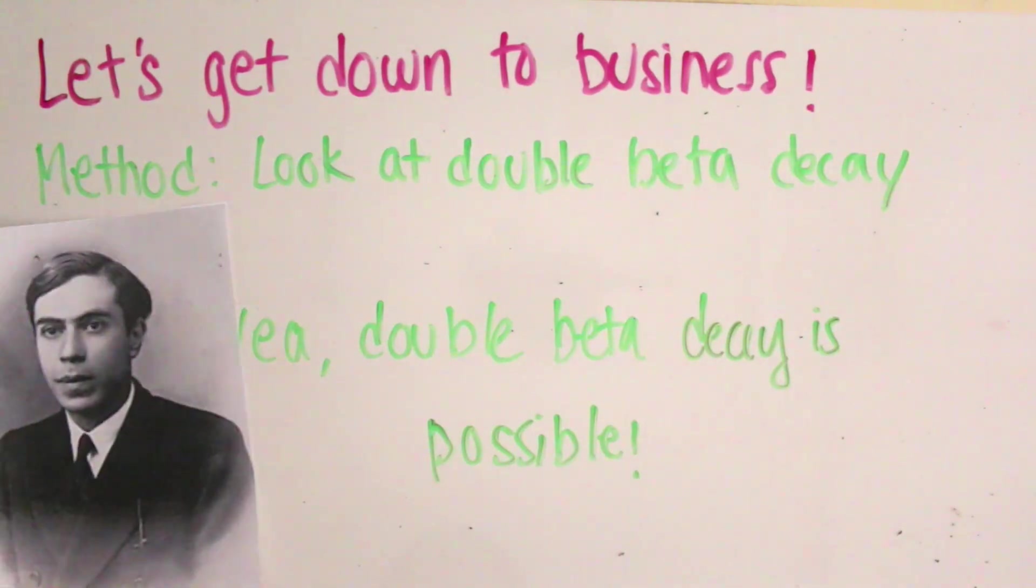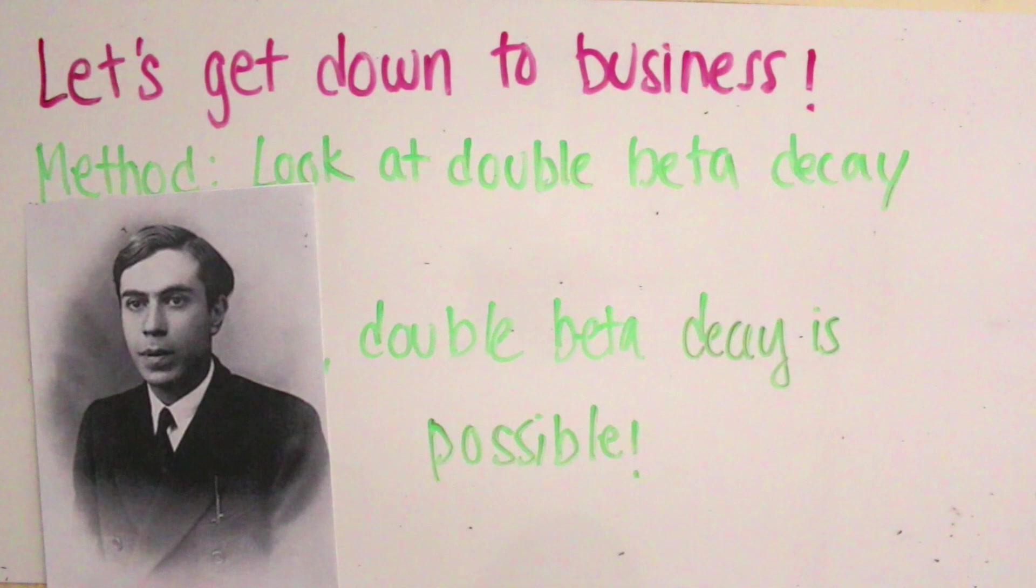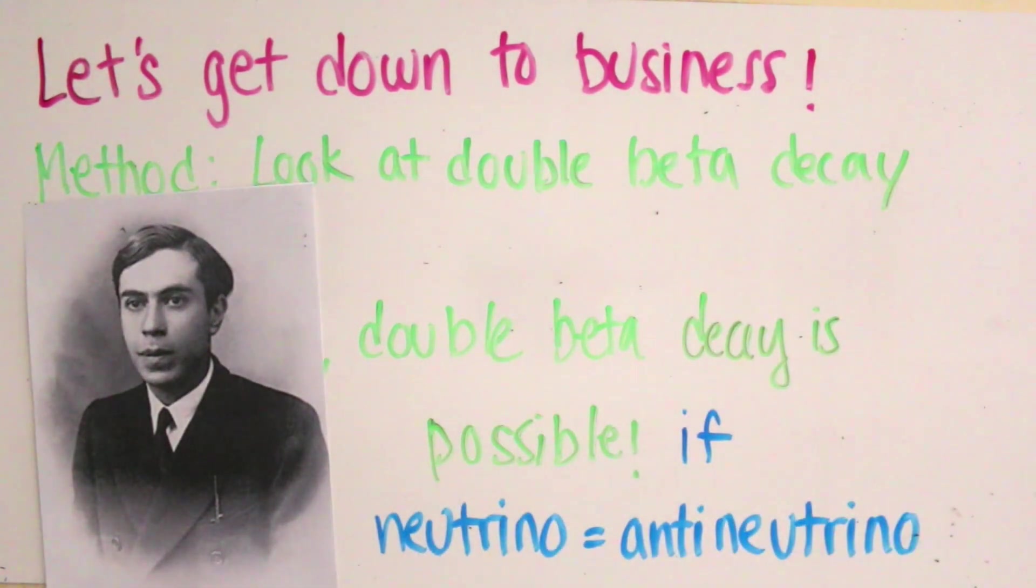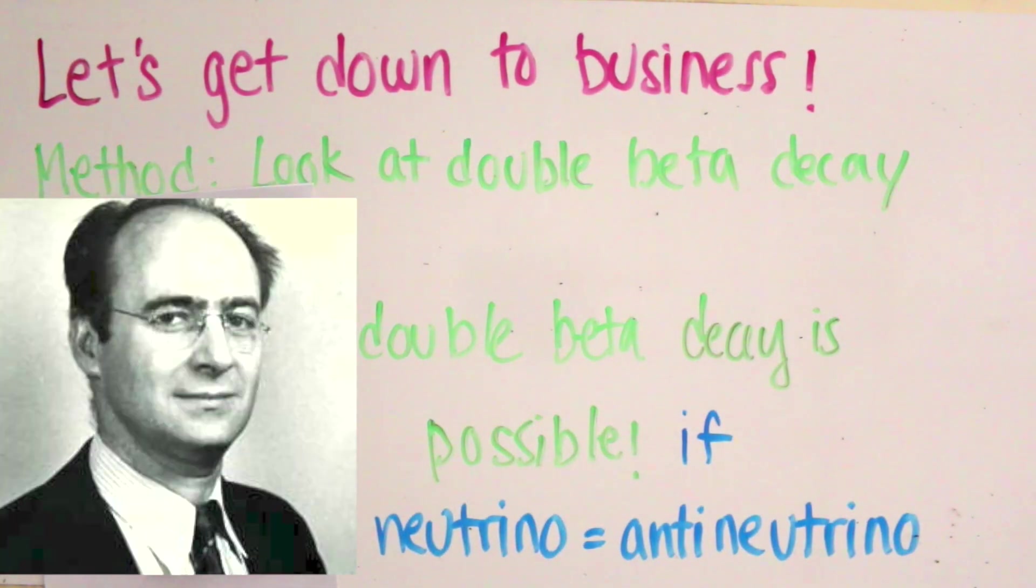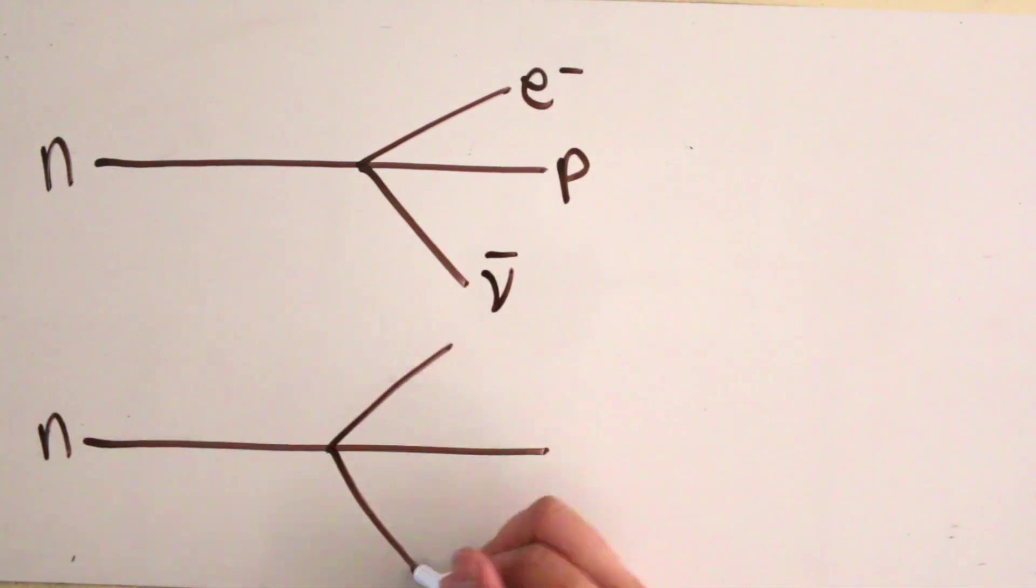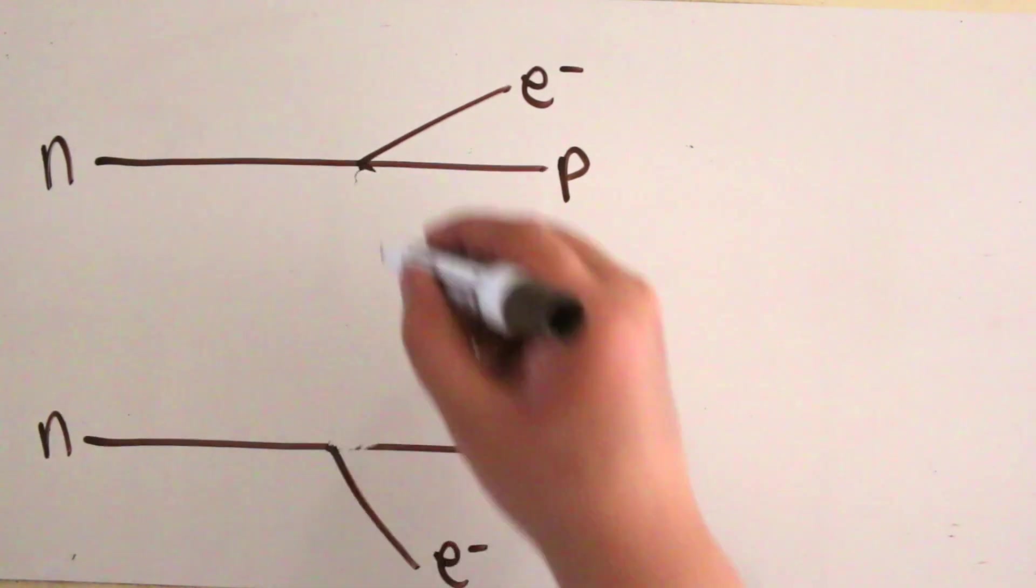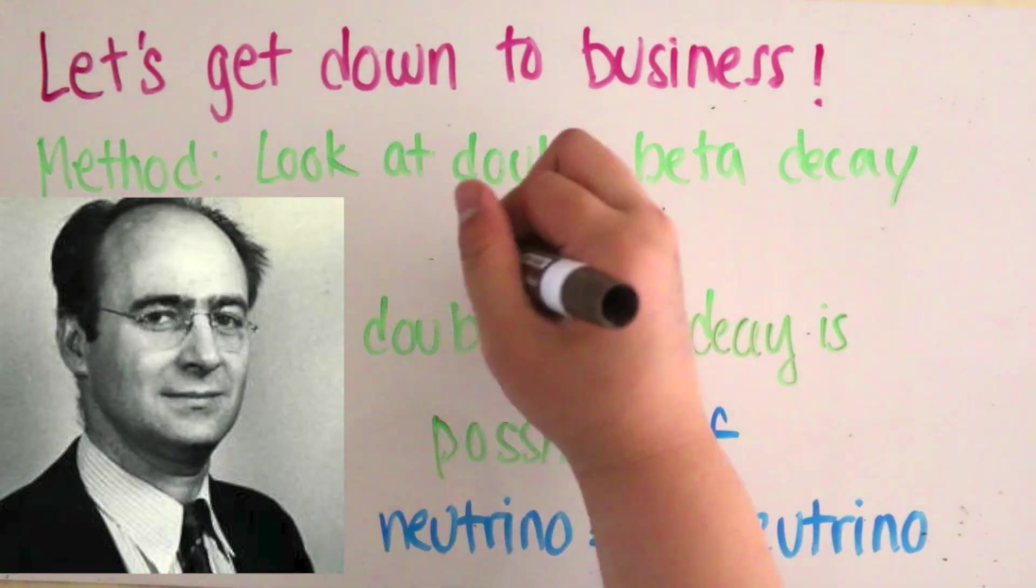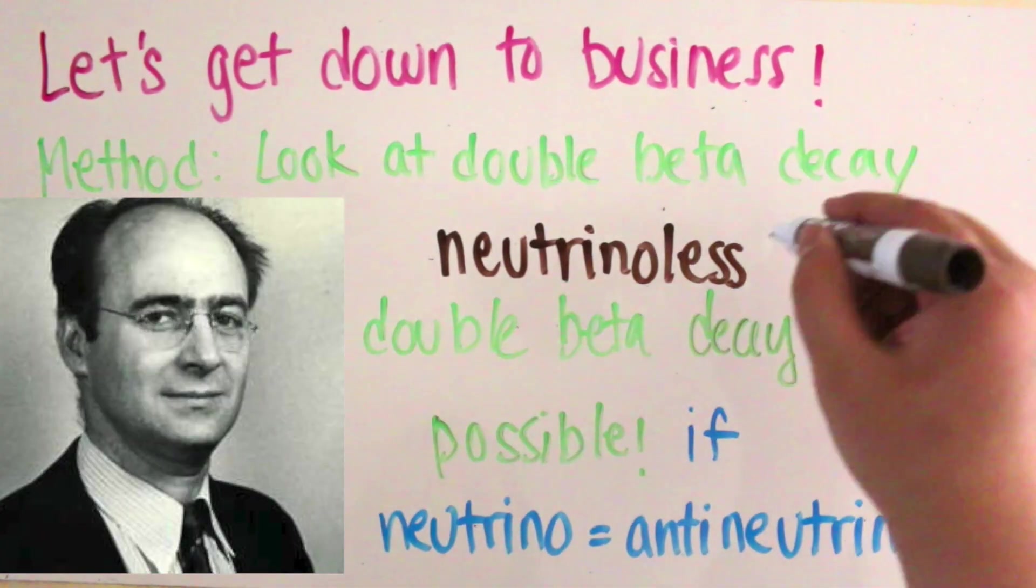Two years later, Majorana said that her theory would be true if neutrinos were their own antiparticle. In 1939, Wendell H. Furry proposed that if neutrinos were Majorana, we wouldn't see any neutrinos in double beta decay since they would annihilate each other. Here we have the idea of neutrinoless double beta decay.